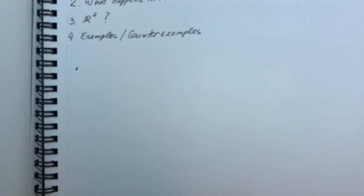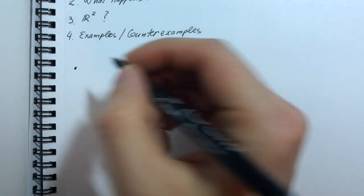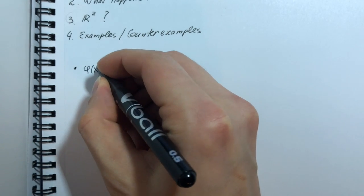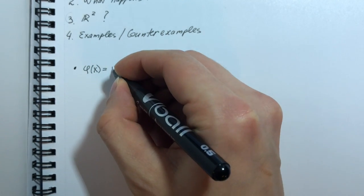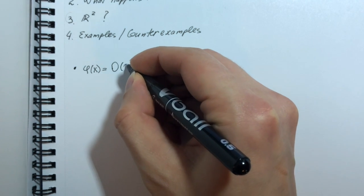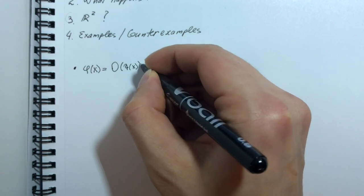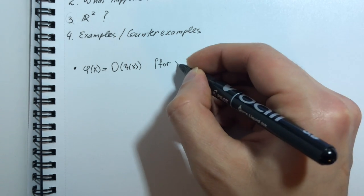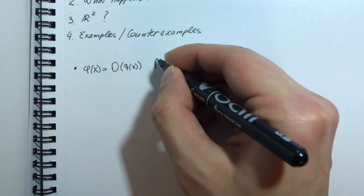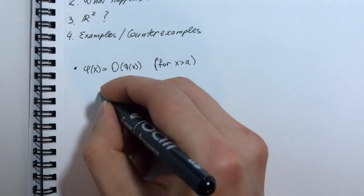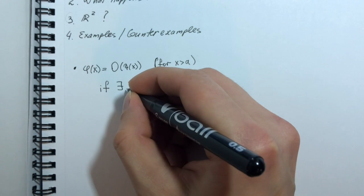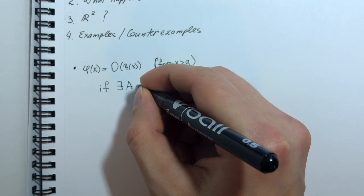We have two functions, phi of x and xi of x, and we write that phi of x is equal to big O of xi of x for x greater than a,